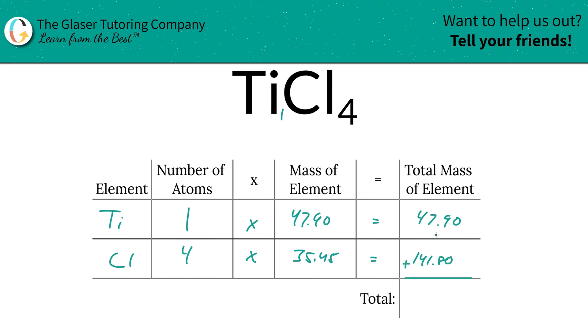Just had to double check that mentally. And then to find the total mass of the entire compound, we're simply just going to add this column up. So that's 189.70, and the units here are in grams per mole because that's molar mass. Now you know how to find the molar mass of titanium tetrachloride. Thanks for watching.